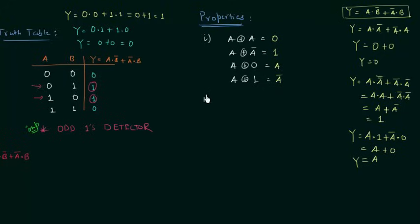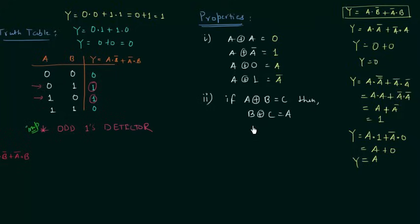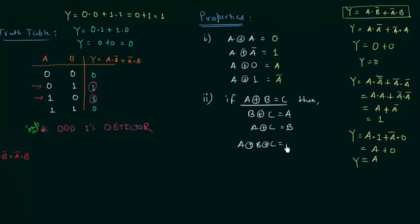The second property states: if A XOR B = C, then B XOR C = A and A XOR C = B. Furthermore, A XOR B XOR C = 0.